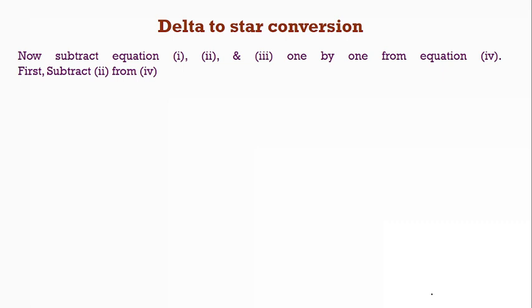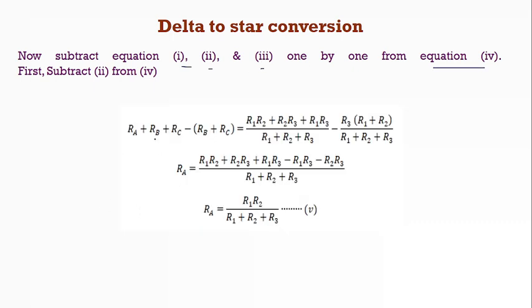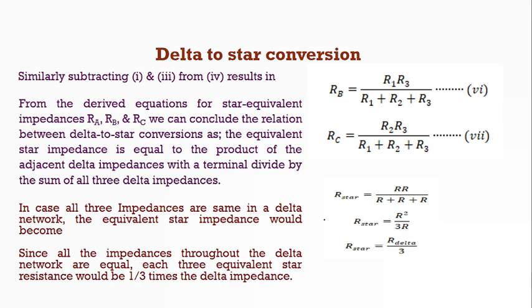So already we have calculated these things. Now, I am going to subtract equations 1, 2 and 3, one by one from equation 4. First, I am subtracting equation 2 from equation 4. We are getting RA resistance is equal to R1 R2 divided by R1 plus R2 plus R3. Let it be equation number 5. Similarly, we can calculate what is RB and what is RC.